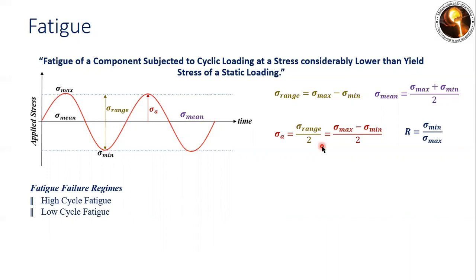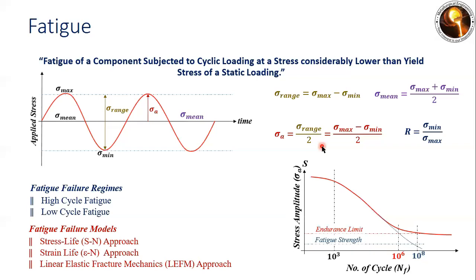When a specimen is operated well below the yield strength under static loading conditions, it runs for a higher number of cycles — near about one million cycles or more — and is considered high cycle fatigue. But when the specimen is operated very near to the yield strength, it may enter the elastic-plastic zone, and in that condition the specimen sustains fewer cycles, failing under one thousand cycles, which is classified as low cycle fatigue.